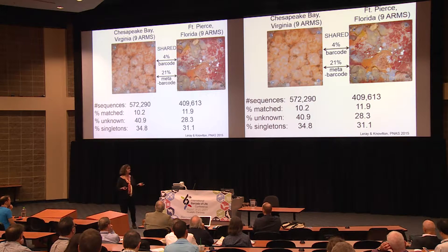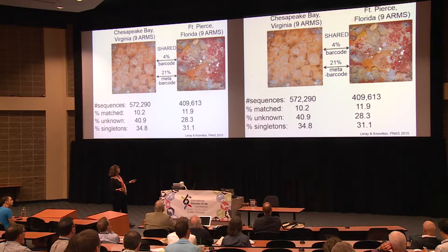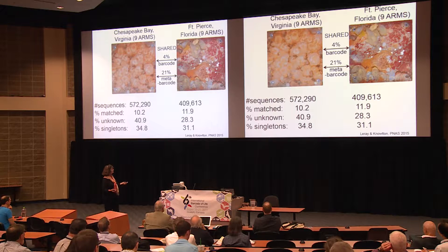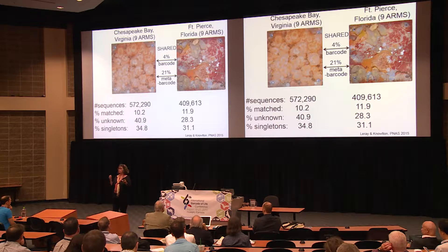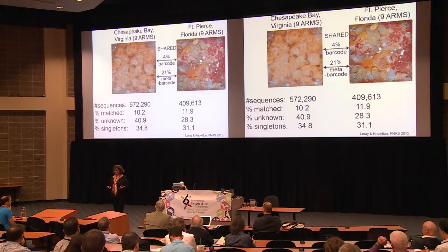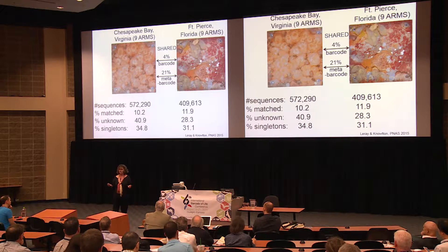Here are some of the results. First, you can see right away that the temperate habitat in Virginia is much less diverse than the subtropical habitat in Florida. About a million sequences were generated. Despite being near two really well-studied places with marine labs, only about less than 12% of the OTUs could be matched to genus and species in any database. There's a huge scarcity of relevant sequences for marine invertebrates in these databases. Moreover, anywhere between 28% and 40% couldn't even be identified to phylum.